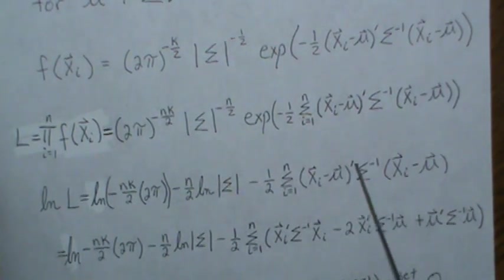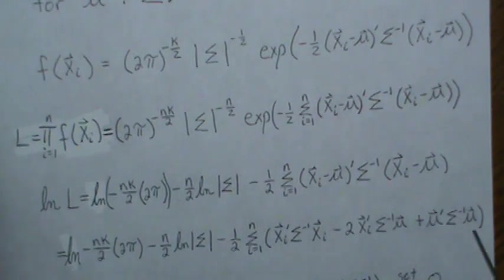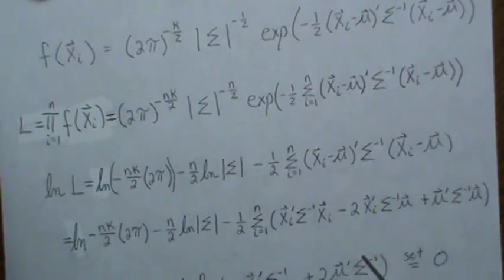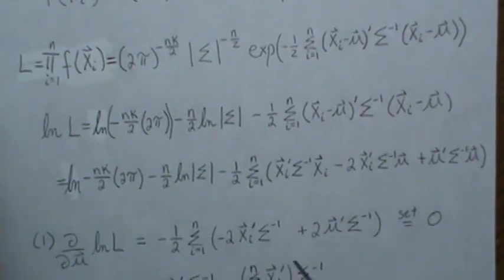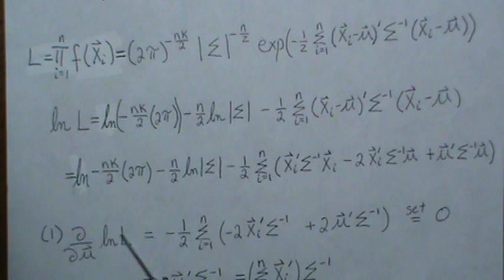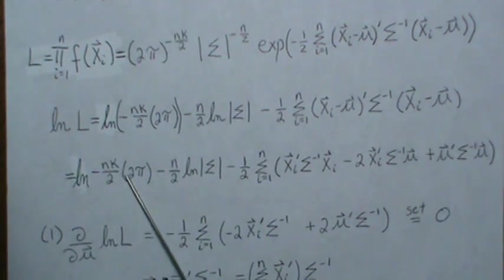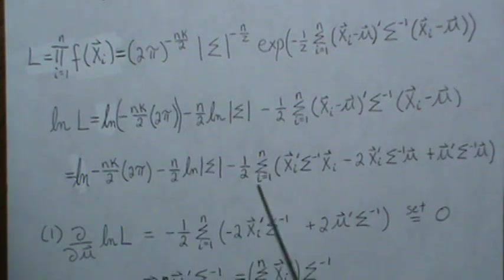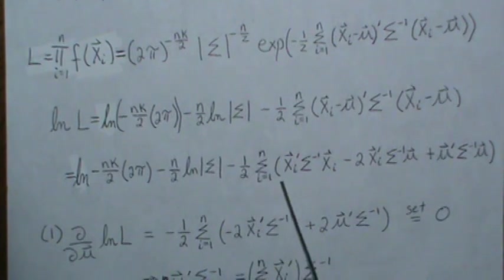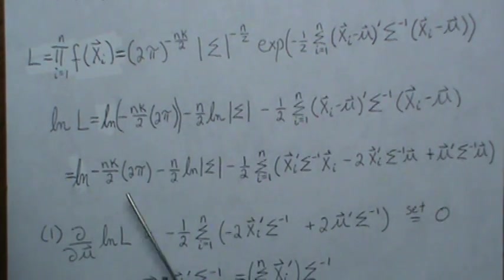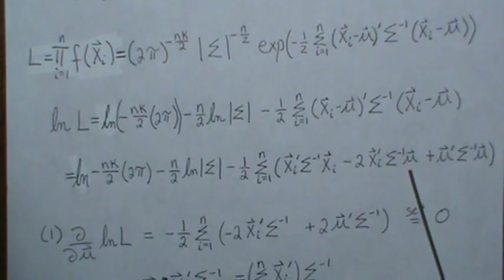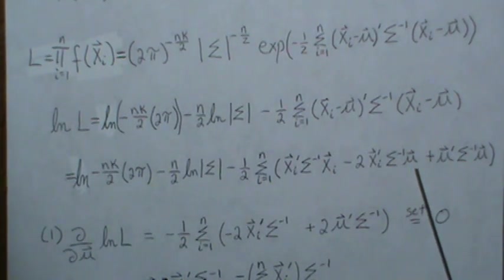What I do is I expand these matrices to this, and that's going to help when we take the derivative. Now let's take the partial derivative with respect to mu. There's no mu here, so it's constant, so we can take the partial inside this through the summation.